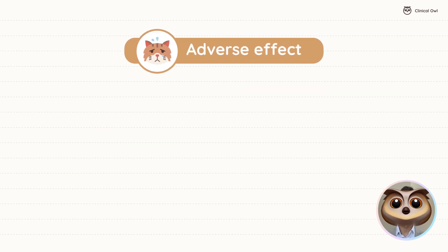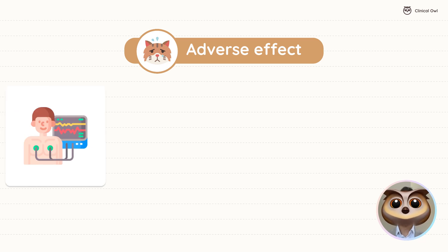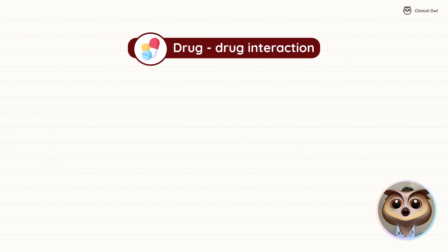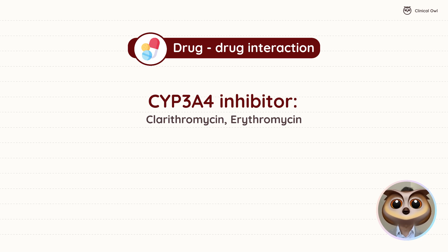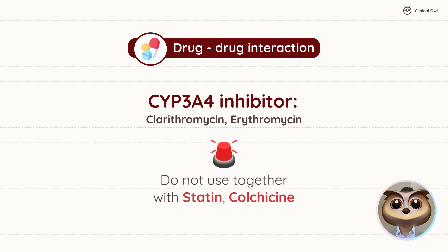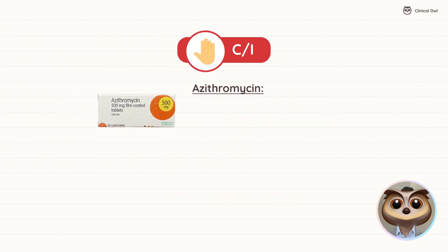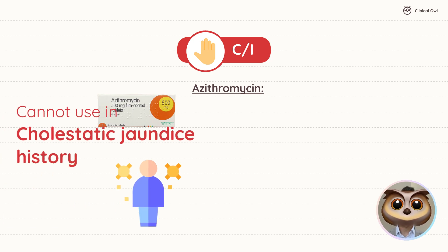Caution is warranted when prescribing macrolides. They can cause adverse effects like QT interval prolongation and hepatotoxicity. Erythromycin and clarithromycin are potent CYP3A4 inhibitors and may interact with other medications metabolized by this pathway, such as statins and colchicine, leading to potentially serious drug interactions. Additionally, renal adjustment may be required, and azithromycin should be avoided in patients with a history of cholestatic jaundice.